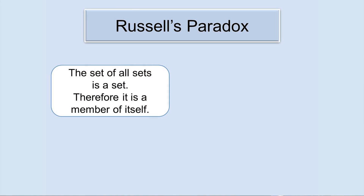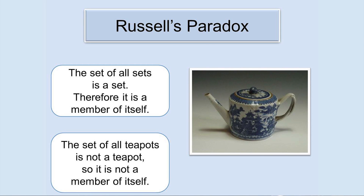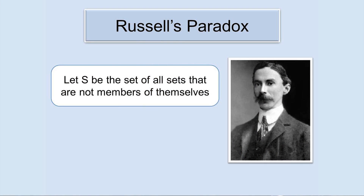Russell's paradox starts with the observation that some sets are members of themselves. For example, the set of all sets is itself a set, so it is a member of itself. Whereas the set of all teapots is not a teapot, so it's not a member of itself. Being a member of itself is therefore a property of some sets but not others. This means we can consider the set of all sets that are not members of themselves — let's call it S.